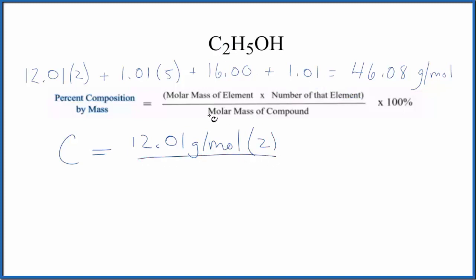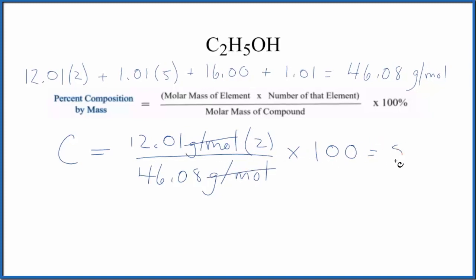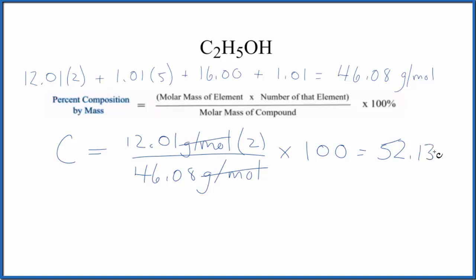Then we divide by the molar mass of the compound, which we just found, and multiply by 100. So we get a percent. We do that, grams per mole is on the top and the bottom. It cancels out. We end up with 52.13%. So if we have a mass of this C2H5OH, 52.13% of that mass, that's going to be carbon atoms.